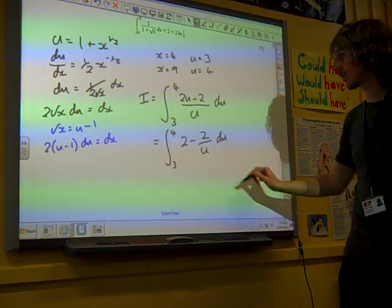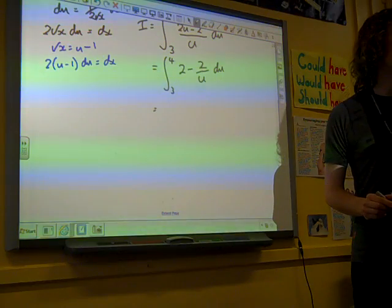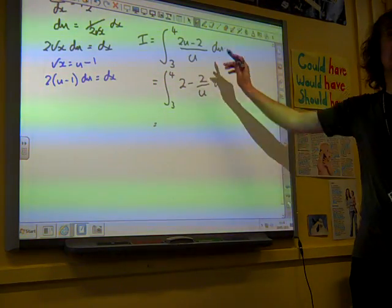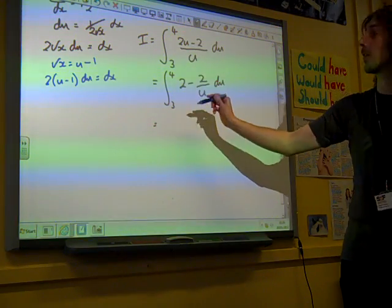I'm going to split up the fraction, and I've got 2 minus 2 over u. And that. We're now ready to integrate it. Notice this is the same kind of trick that we used in the last one, isn't it, to split up the fraction like that.